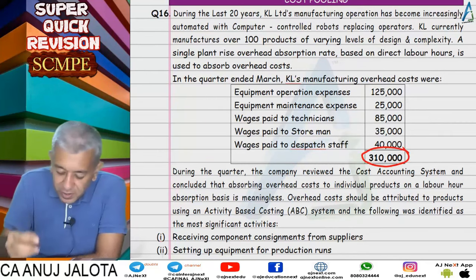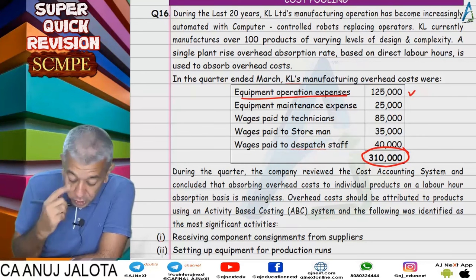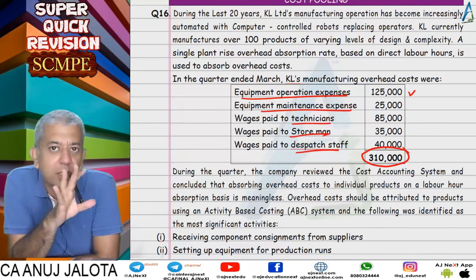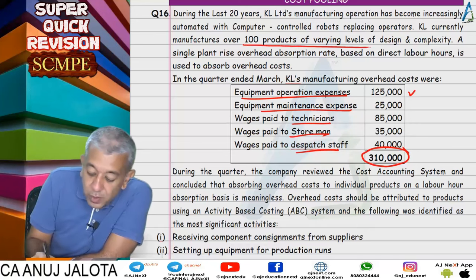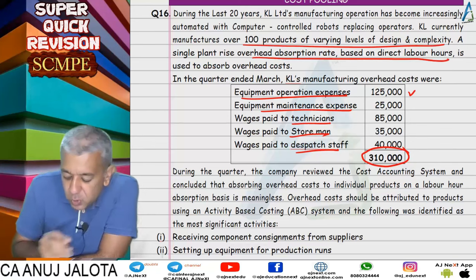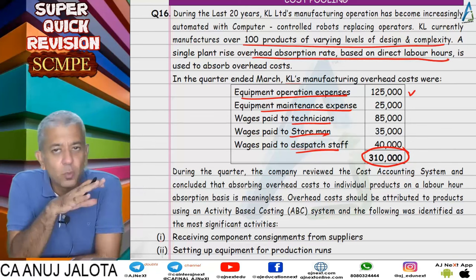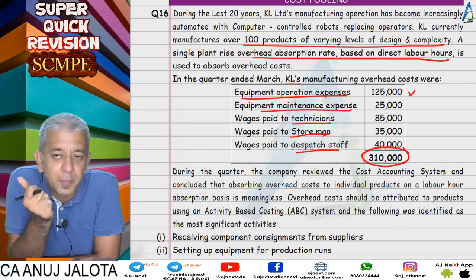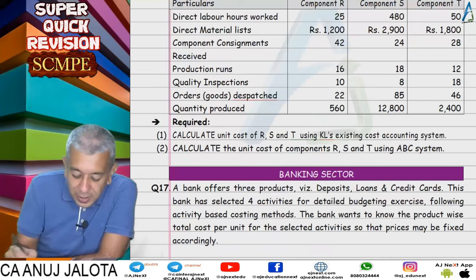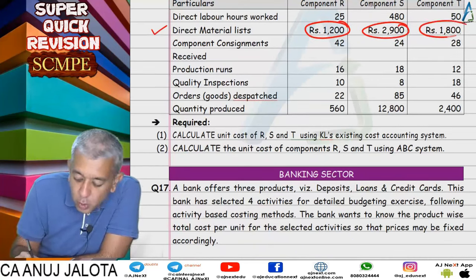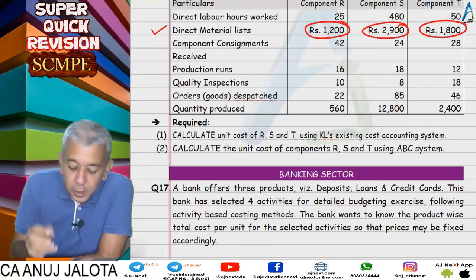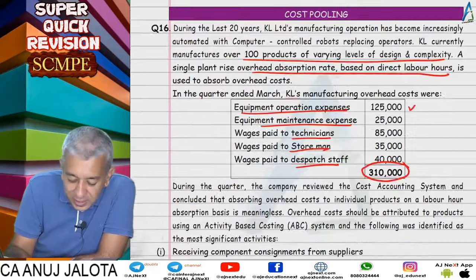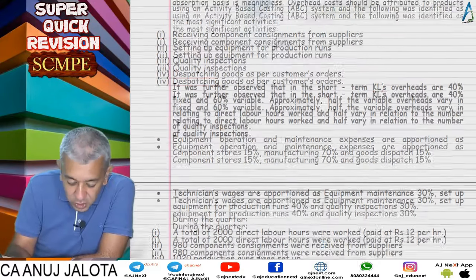Question 16: overheads were given as 3,10,000 bifurcated into five types — equipment operation expenses, equipment maintenance expenses, wages paid to technicians, wages to storemen, and dispatch staff. Currently all overheads are absorbed using direct labour hours. First we find cost per unit under absorption costing: direct material was given directly as total direct material consumed.